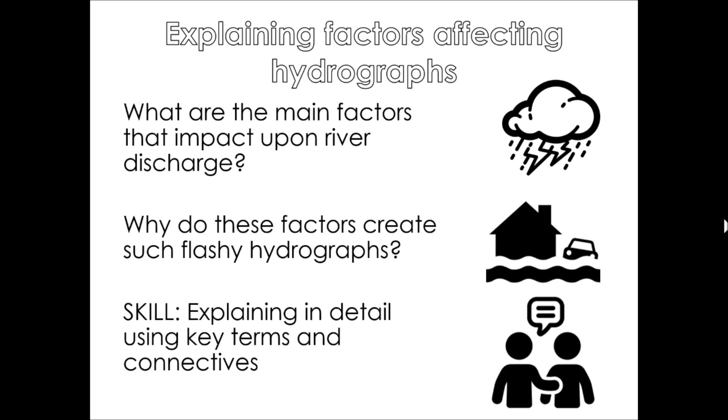Hello geographers and welcome to this short video on factors affecting hydrographs. This is a continuation of your lesson that you will have done previously on causes of flooding and learning about the features of a hydrograph. Today we're going to be thinking about the main factors that change the shape of a hydrograph, the impact upon how much water is flowing through the river, the speed at which it's getting into the river, and that lag time. We're also going to be thinking about an exam skill by using connective phrases and key terms to explain how each of these factors leads to a change in the hydrograph and river discharge.